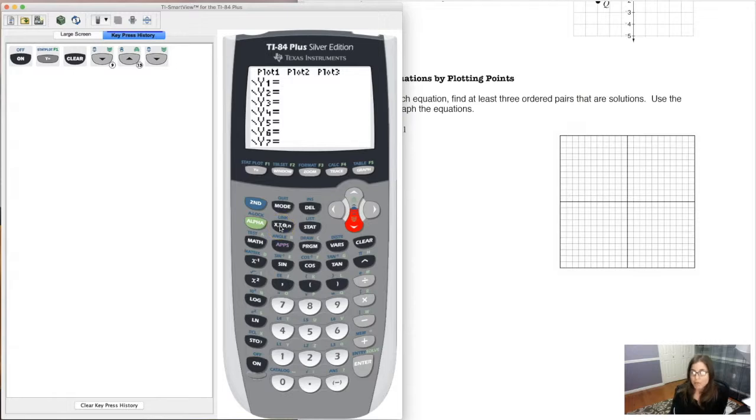I'll explain at a later date what the t, theta, and n refer to, we'll get to that a little bit later on in the semester, we're just not there yet. So I want to type in 4x, oops, let me hit it, x minus 1.